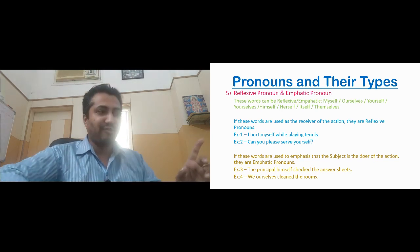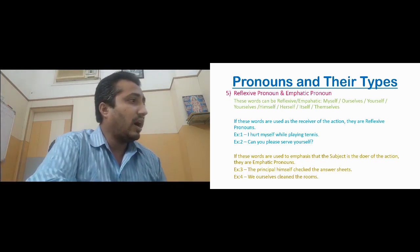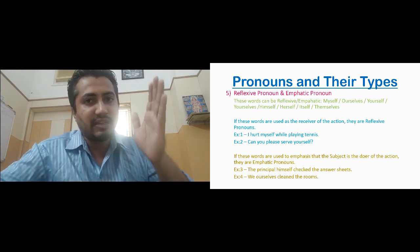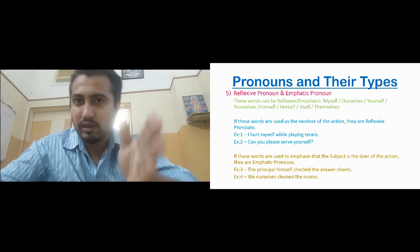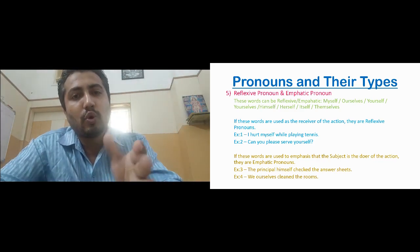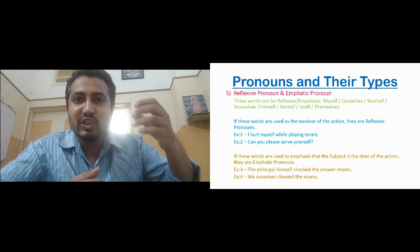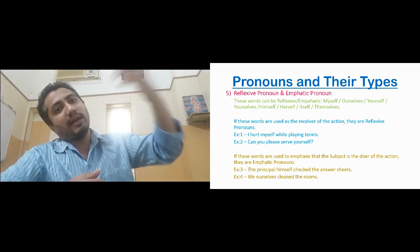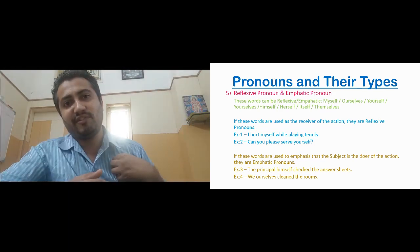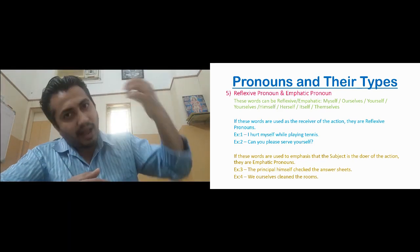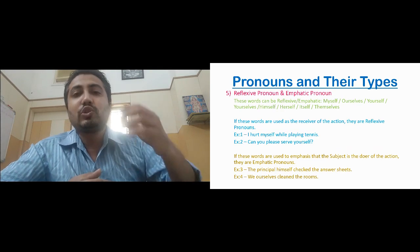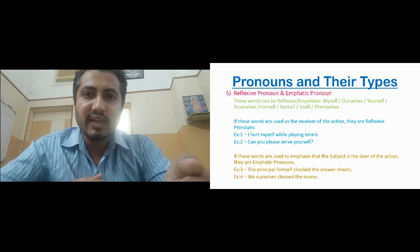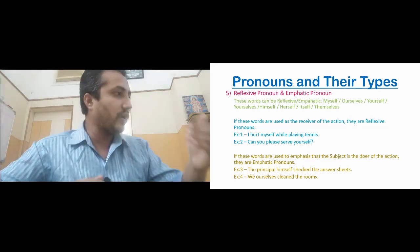Let us look at some examples of reflexive pronouns. 'I hurt myself while playing tennis.' Subject is 'I', verb is 'hurt'. I hurt whom? Myself. So the action of hurting is done on myself — I am the receiver of the action. Therefore 'myself' here is a reflexive pronoun. Another example: 'Can you please serve yourself?' The subject is 'you', the action is serving. The action of serving is done to yourself — yourself is the receiver of the action, so 'yourself' is a reflexive pronoun.